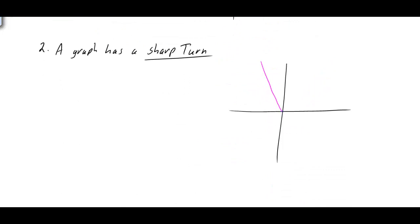If I move the absolute value over here, for example, the derivative does not exist at this point. Your derivative would exist at other points in the graph, just not at the sharp turn.